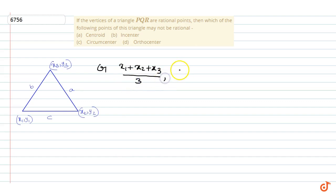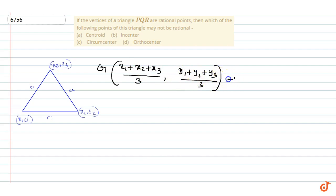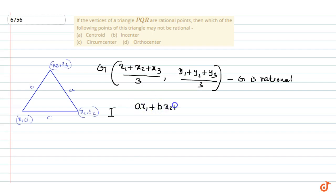The centroid G is given by (x1 + x2 + x3) divided by 3, and (y1 + y2 + y3) divided by 3. Therefore, if x1, x2, x3 and y1, y2, y3 are rational, then G is rational. Now for the incenter: the incenter I is given by (a·x1 + b·x2 + c·x3).